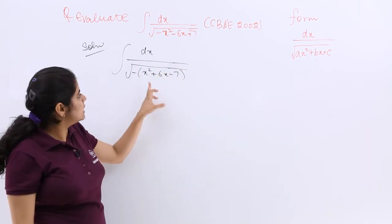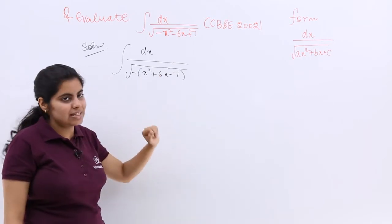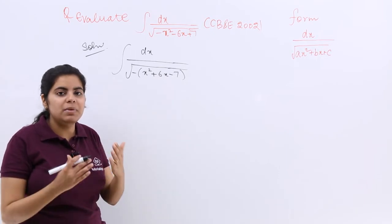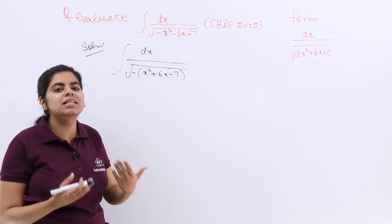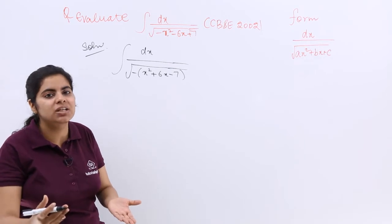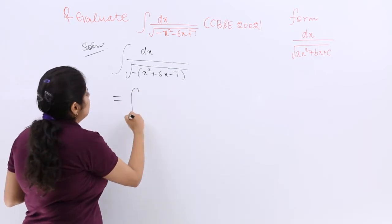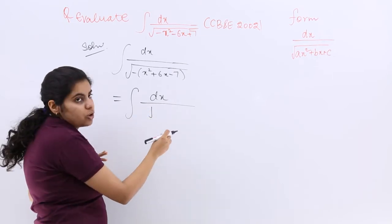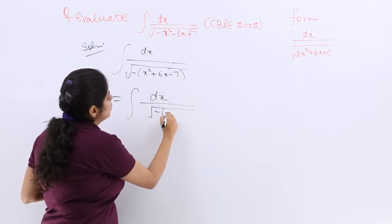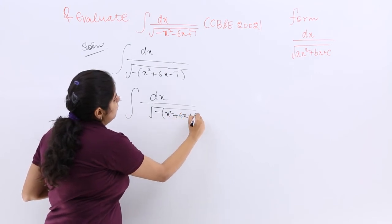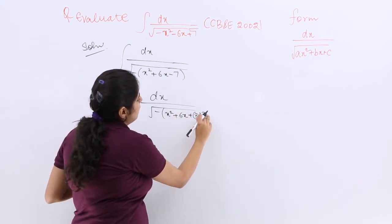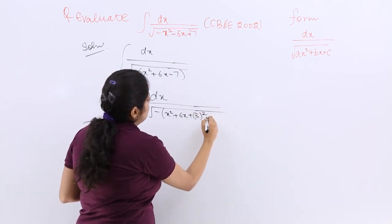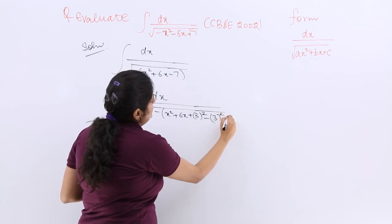Now see, here it is x square, here it is 6x. The coefficient of x is 6, make it half it becomes 3, make it square it becomes 3 square which is 9. So you have to add and subtract 9. So I will be writing that it is dx upon minus sign inside the root - x square plus 6x plus 3 square. Again it has to be made power as 2, then minus 3 square minus 7.